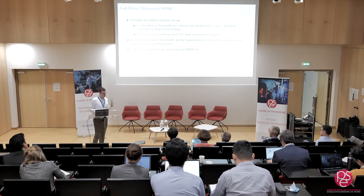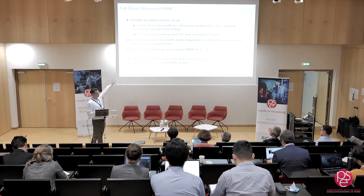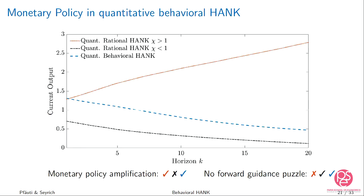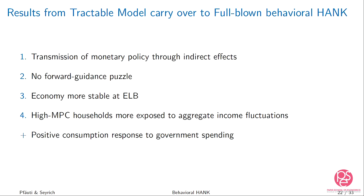The calibration follows McKay-Nakamura-Steinsson with one crucial difference: we ensure that high-MPC households are more exposed to aggregate fluctuations by having high-productivity households receive a larger share of dividend income — the same channels as in the tractable model. We can match all the facts including the one on fiscal policy. Now let's see whether this even matters for policy.